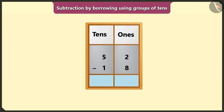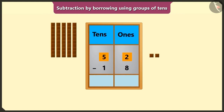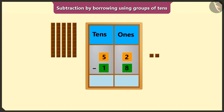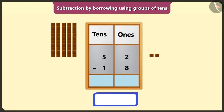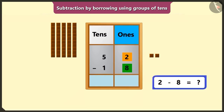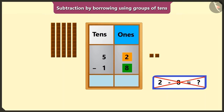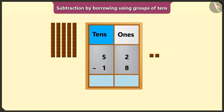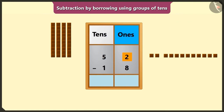So, here we have to perform 52 minus 18. First of all, we will perform subtraction of the numbers in the box of ones. But here 2 is smaller than 8. We cannot subtract a big number from a small number. So, here we will borrow 1 ten from the number 5 in the box of tens. It means the number in the place of ones can borrow from its neighbor number in the box of tens.